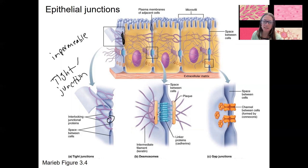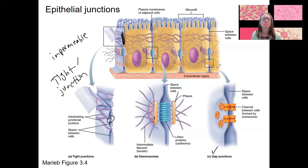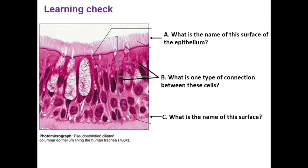There are also desmosomes — basically like Velcro — holding cells together a little more loosely with slightly more space. You can have both tight junctions and desmosomes in the same cells. Lastly, gap junctions are channels that link cells in terms of chemical and even electrical communication. These can be present to junction epithelial cells. Tight junctions in particular will be important going forward.